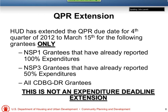We did a QPR extension for all NSP-1 and NSP-3 grantees that had met the expenditure deadline. They are still able to submit their QPR by March 15th, which is Friday. That was because we were having some issues with DRGR, which has been largely fixed — DRGR is working faster than I've ever seen it work. Just wanted to make sure everyone understands this is a QPR extension, not an expenditure deadline extension.